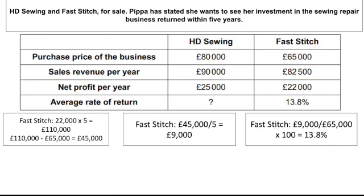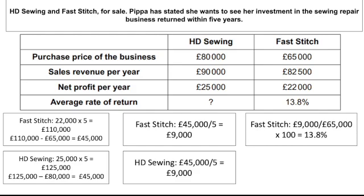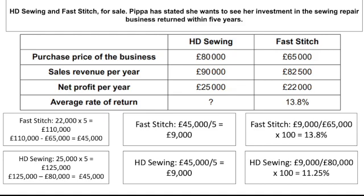Let's do the same for HD Sewing. We've got $25,000 times by five equals $125,000. Minus $80,000, and we've got the exact same total profit of $45,000. But the purchase price of the business is different. So we still divide by five. We get $45,000 divided by five — again $9,000. But then we've got $9,000 divided by $80,000 times by 100 and we get 11.25%. So which one do we pick? We pick Fast Stitch because it's got the highest average rate of return.